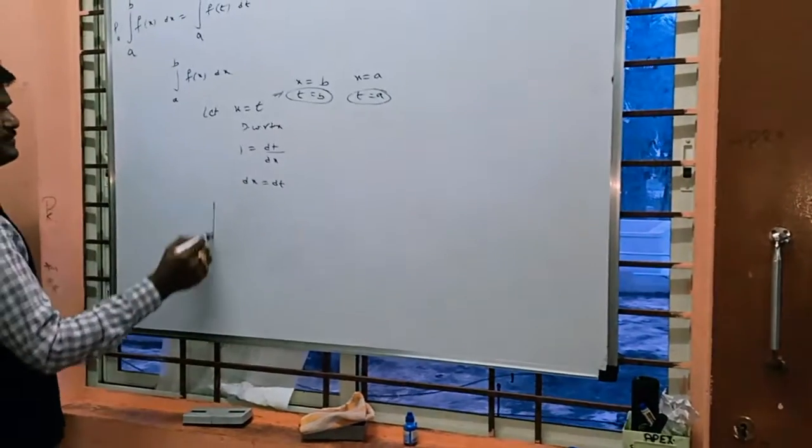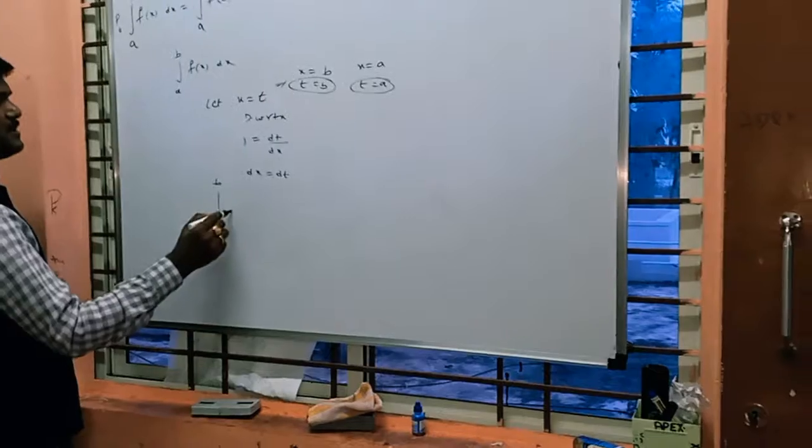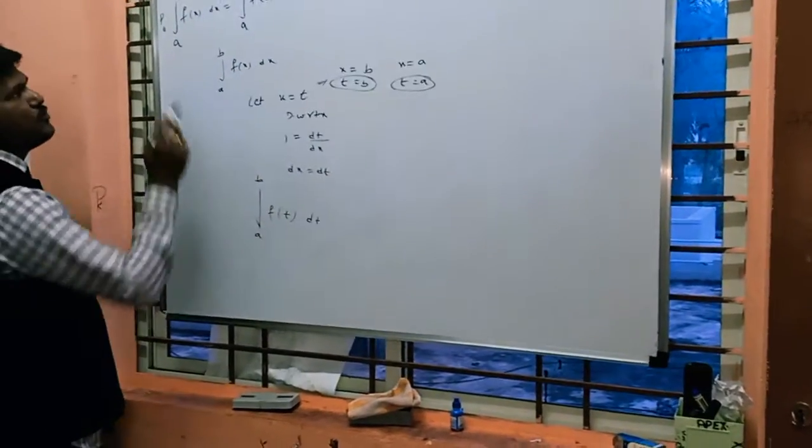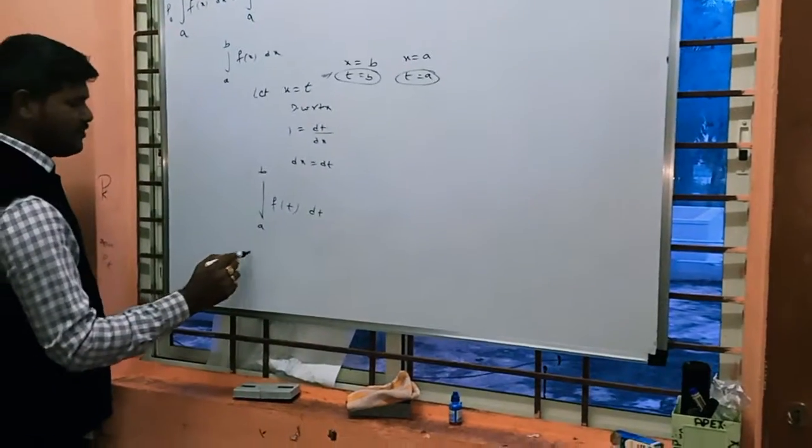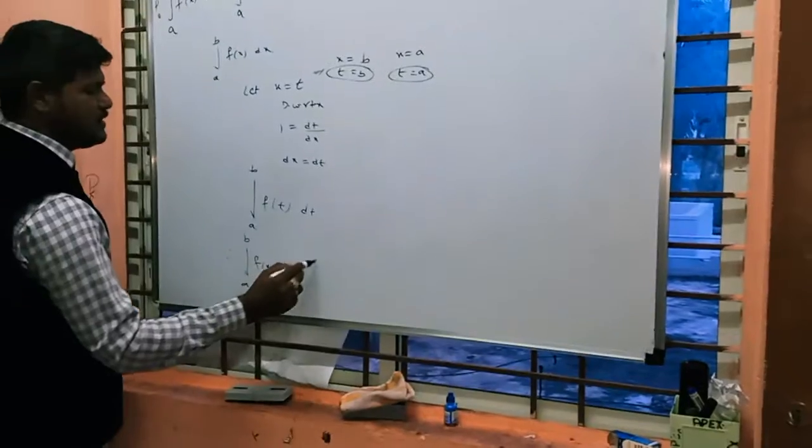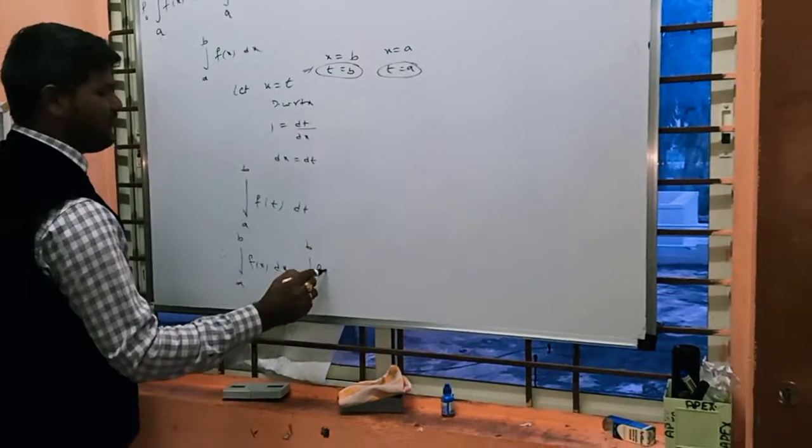Now we can rewrite integral a to b f(t)dt. In place of x, in place of dx, we write dt. We considered LHS and got LHS. Therefore, integral a to b f(x)dx equals integral a to b f(t)dt.